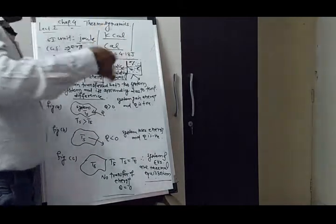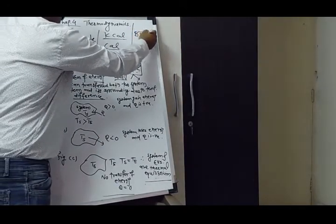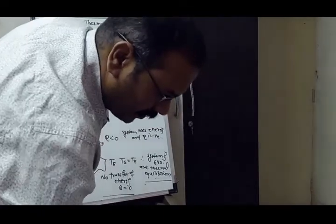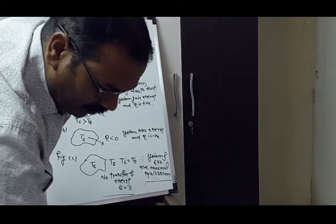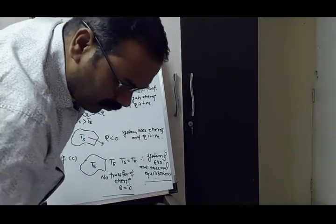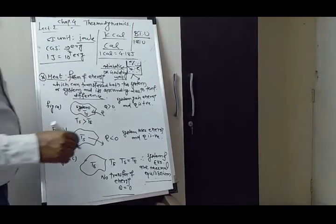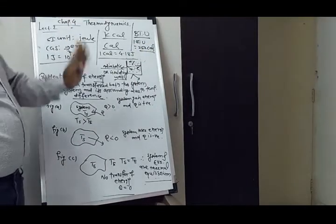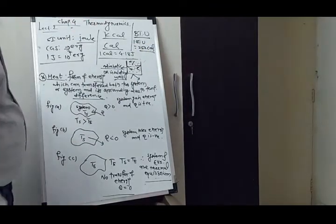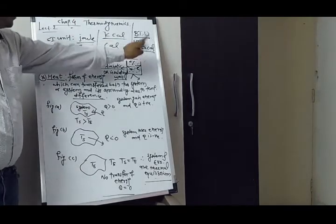For practical purposes in industry, we use the Board of Trade Unit, abbreviated as BTU. The relation between BTU and calories is: 1 BTU equals 252 calories. This is the general information about BTU and its relation with calories.